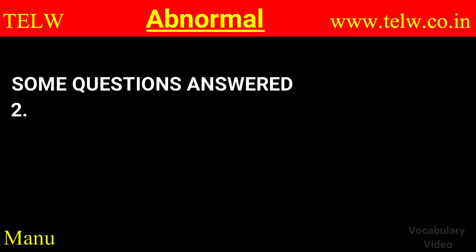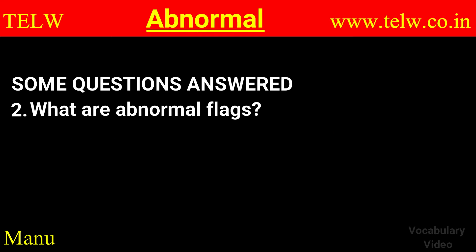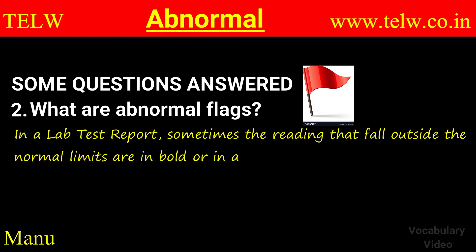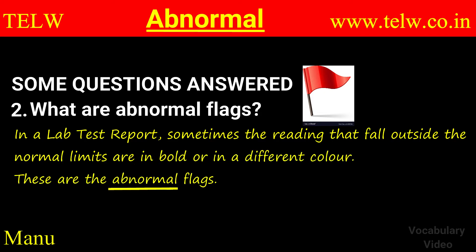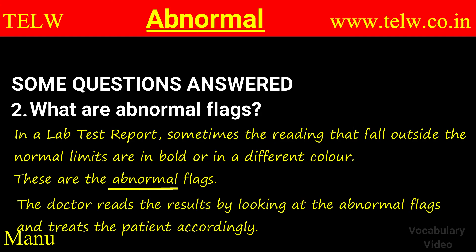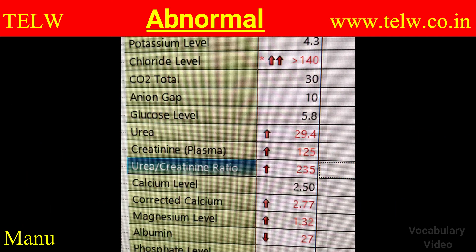The second question is: what are abnormal flags? In a lab test report, a reading that falls outside the normal limits is sometimes shown in bold or in a different color — these are called the abnormal flags. The doctor reads the results by looking at the abnormal flags and treats the patient accordingly, without going through every single figure in the lab report. Look at this picture — the figures in red are the abnormal flags, and the arrows indicate whether they are above normal or below.